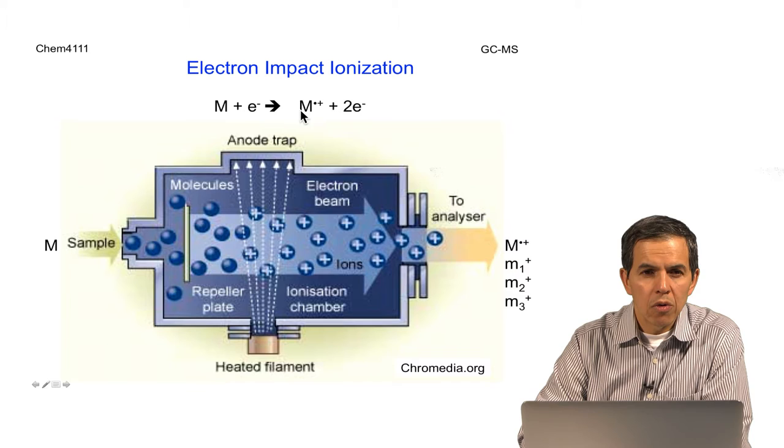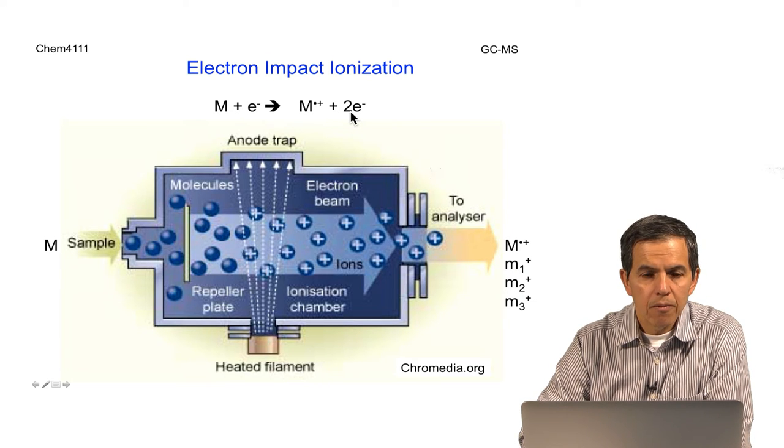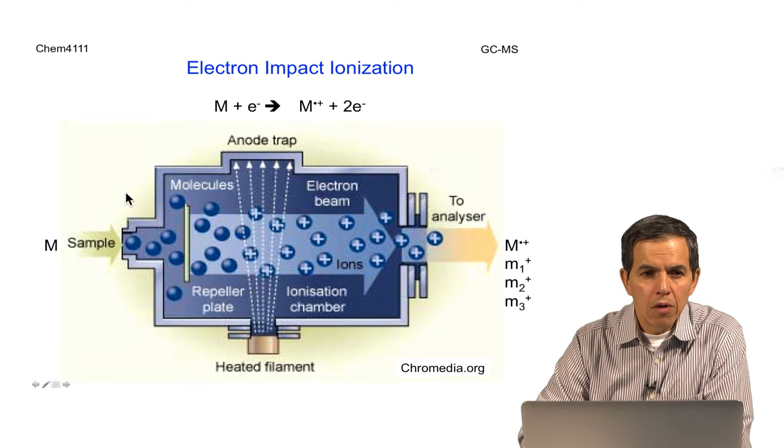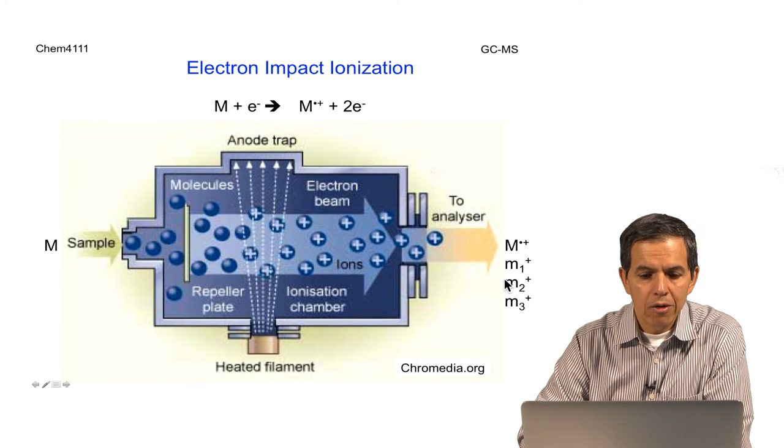Upon collision it produces an ion and the release of two electrons. When a component travels from the sample through the shower of electrons, the ions will be produced, keeping in mind that it's not only these ions, but also fragments of these ions that will be detected.